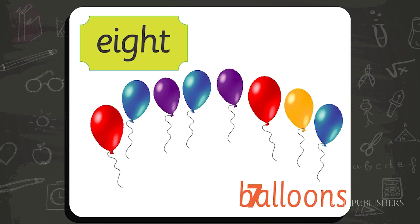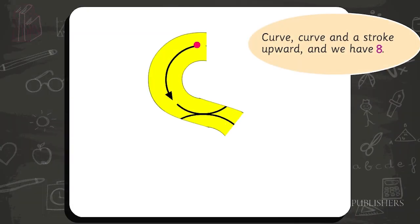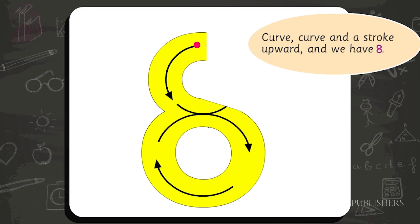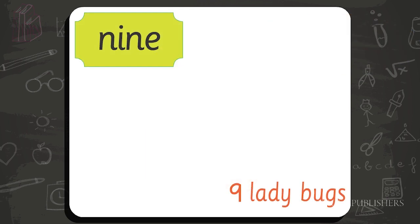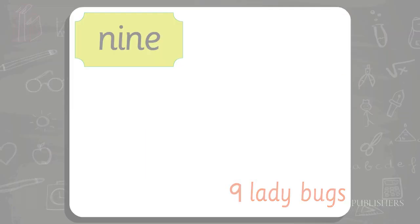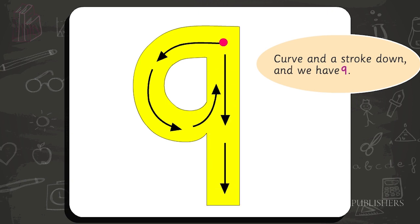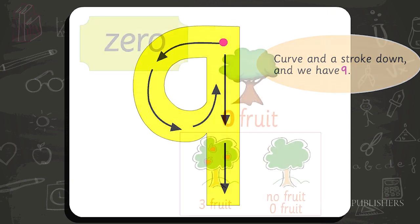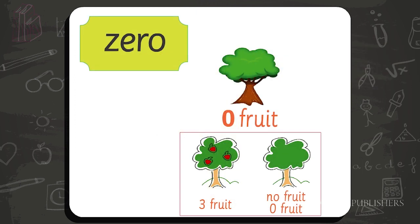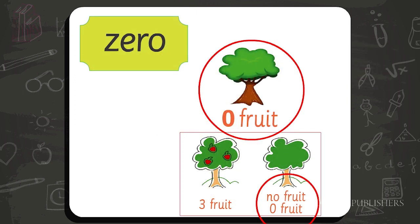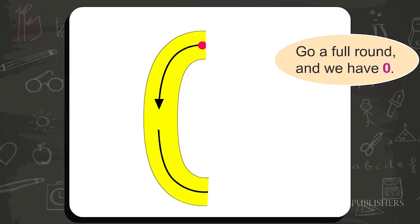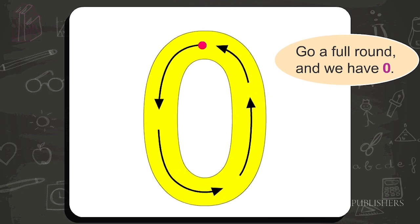Eight — eight balloons. Curve, curve and a stroke upward, and we have eight. Nine — nine ladybugs. Curve and a stroke down, and we have nine. Zero — zero fruit. Go a full round and we have zero.